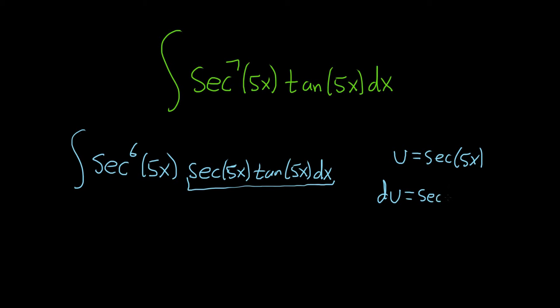So secant 5x tangent 5x times the derivative of the inside. So the inside function is 5x, so its derivative is 5 and then we have a dx. That's the chain rule.